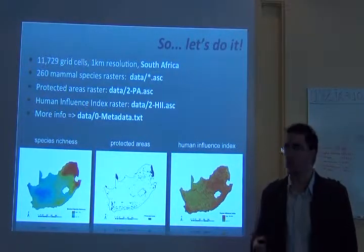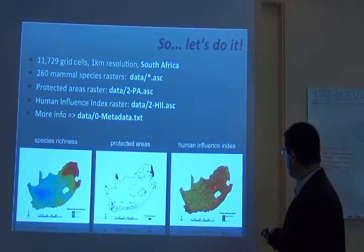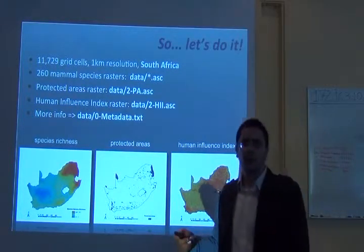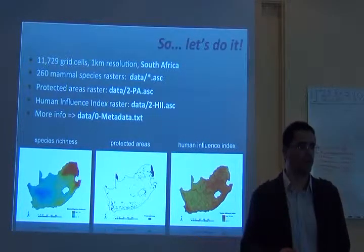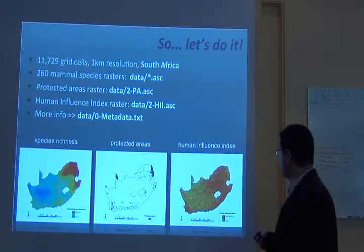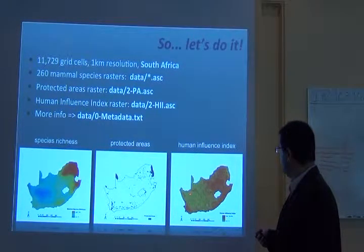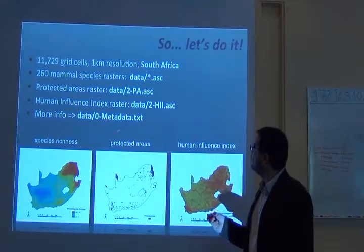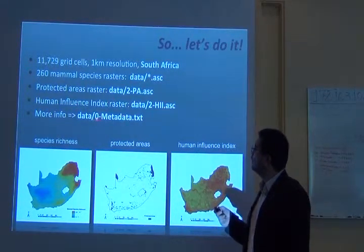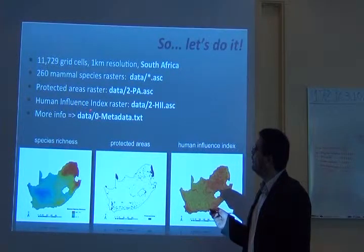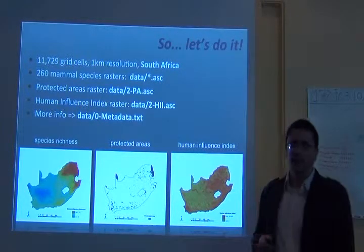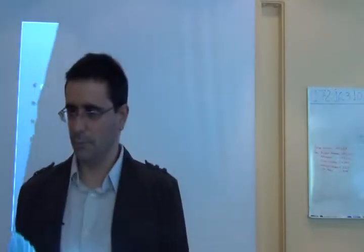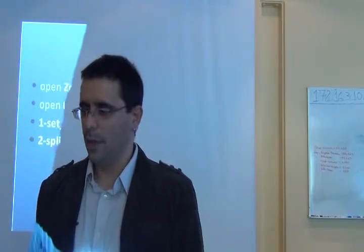So, this human influence index will be used as our cost. This is our cost file. We want to avoid places like this in which human influence is very high because you can have conflicts with biodiversity protection. And we will try to select areas in places where human influence is low. You can find more information on these particular files in the zero metadata file.